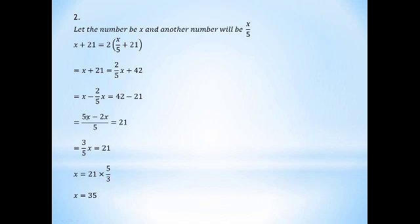We multiply 21 by 2 to get 42. So x minus 2 by 5 x equals 42. Then minus 21 on both sides. We find the LCM; LCM is 5.